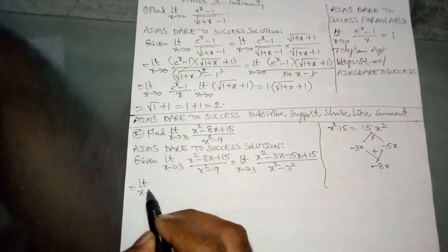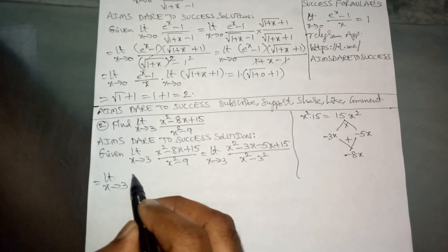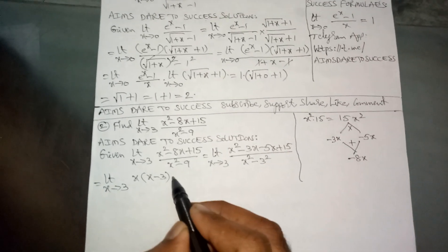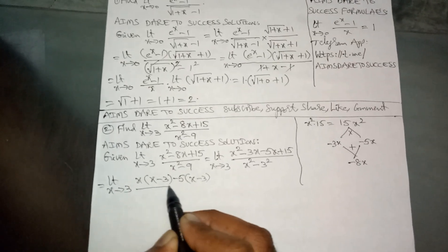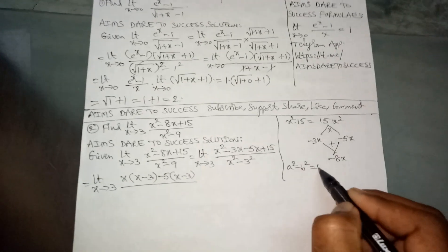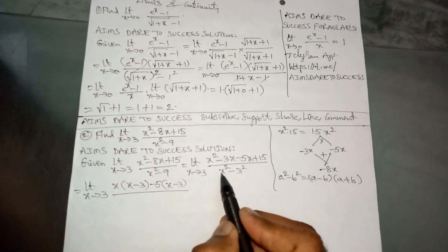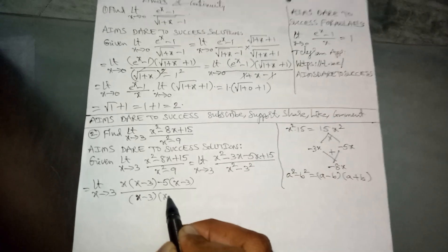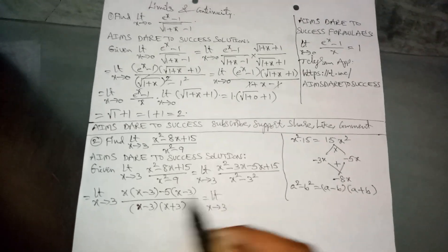Taking limit x tends to 3: in the numerator, take x common from the first two terms to get x(x - 3), and take minus 5 common from the last two terms to get minus 5(x - 3). For the denominator, using the formula a² - b² = (a - b)(a + b), x² - 3² becomes (x - 3)(x + 3).